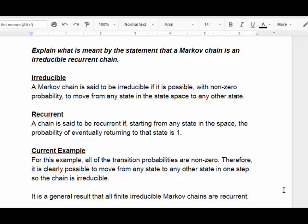Explain what is meant by the statement that a Markov chain is an irreducible recurrent chain. So essentially what does irreducibility mean? A Markov chain is said to be irreducible if it is possible, with non-zero probability, to move from any state in the state space to any other state. And it is recurrent. A chain is said to be recurrent if, starting from any state in the space, the probability of returning to that state is 1.